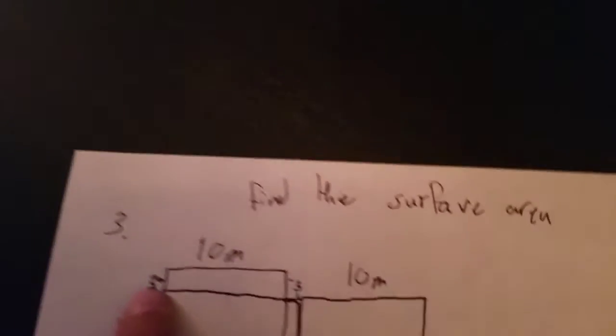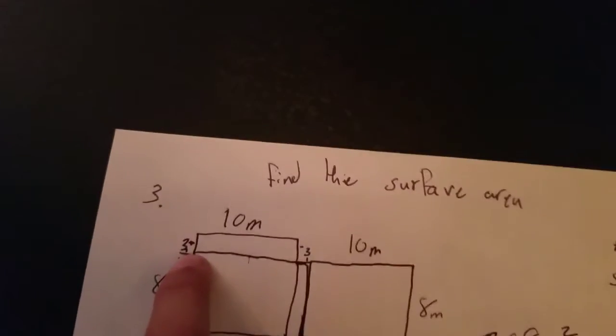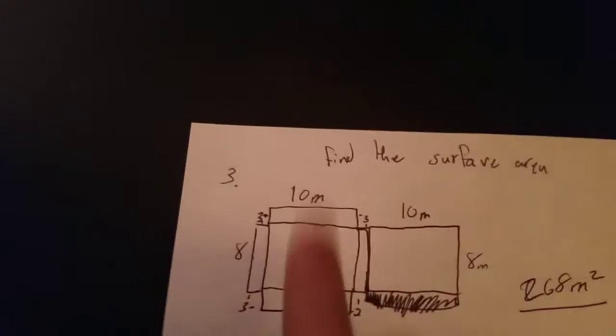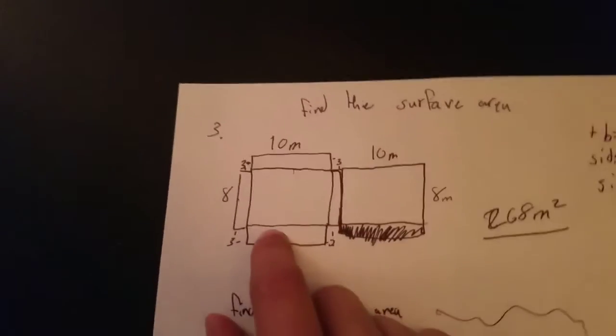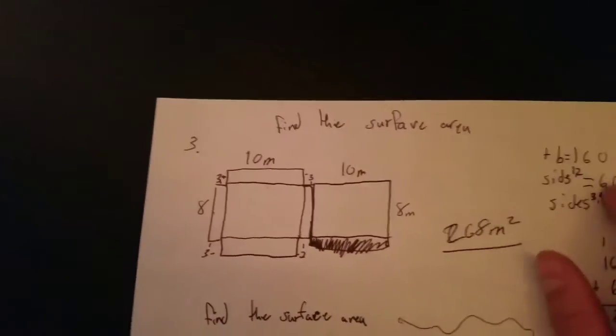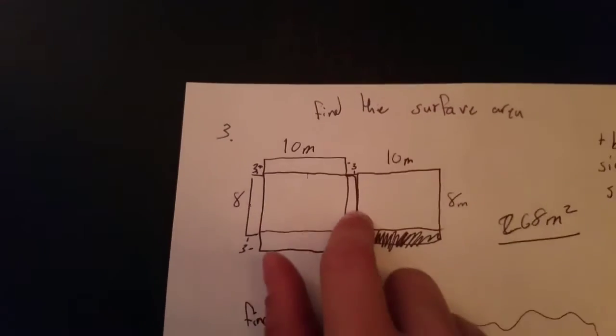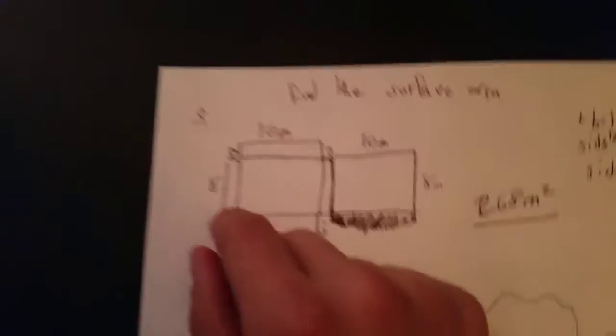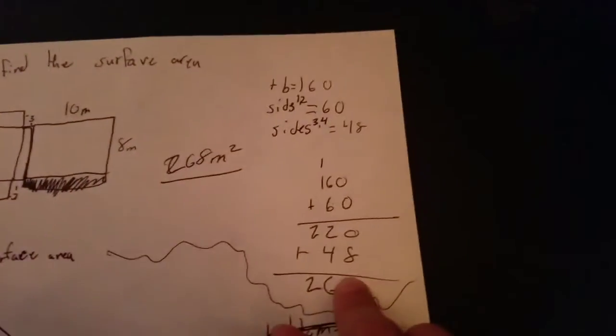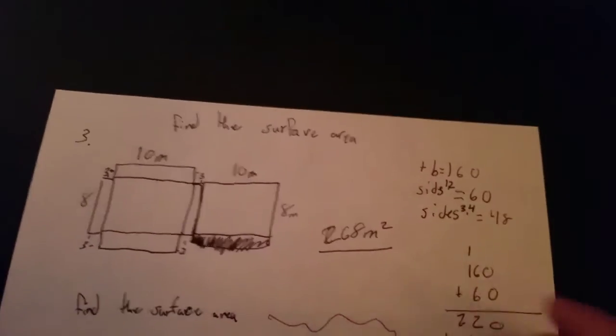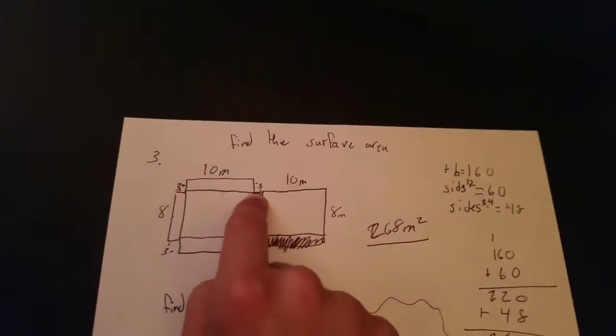And so now we have the sides 1 and 2 which right here it has a 3. So 3 times 10 equals 30 times 2 since you have two of them equals 60. So sides 1 and 2 equals 60. Sides 3 and 4, which are this one and this one, are 3 times 8. Now 3 times 8 equals 24. And you multiply that by 2 to get 48. You add them all together. That will give you 268. So it would be 268 meters squared because it is a two dimensional figure.